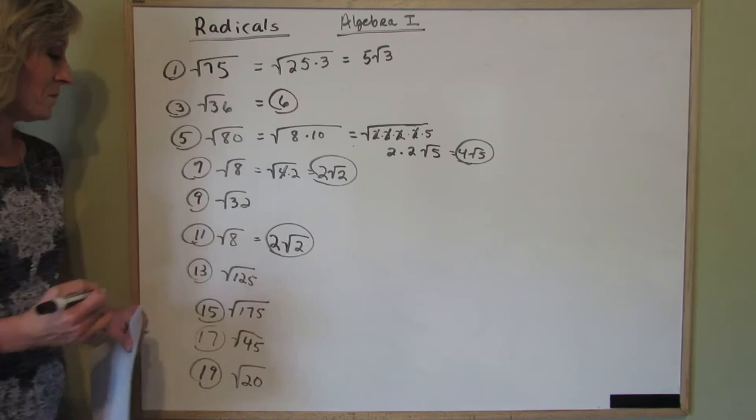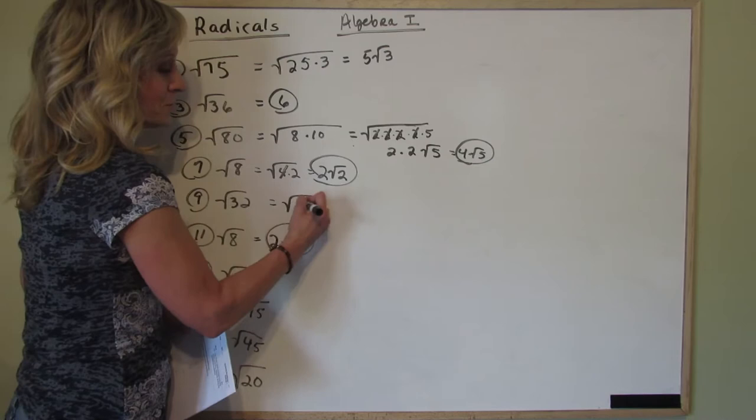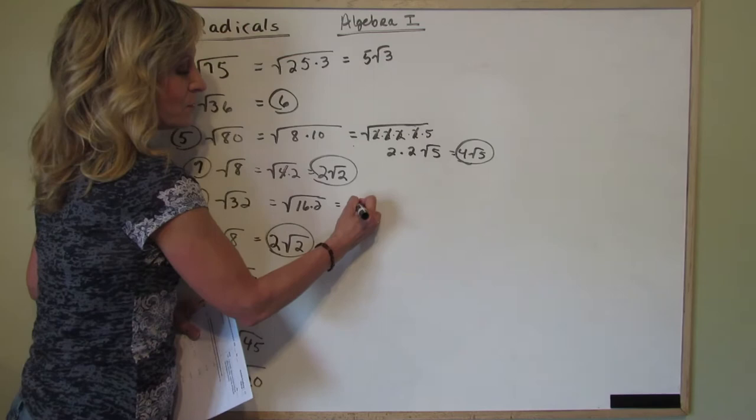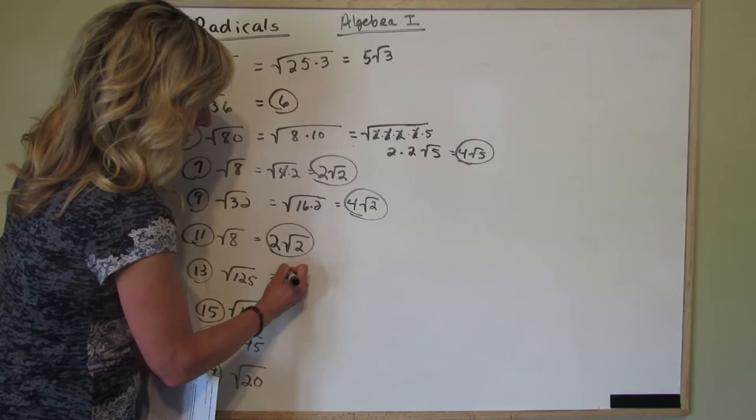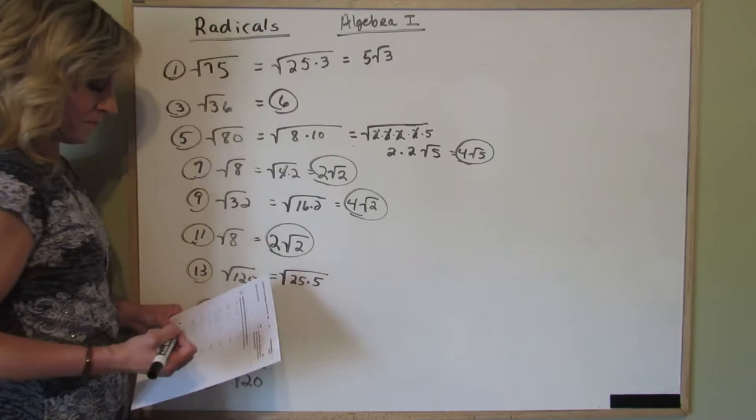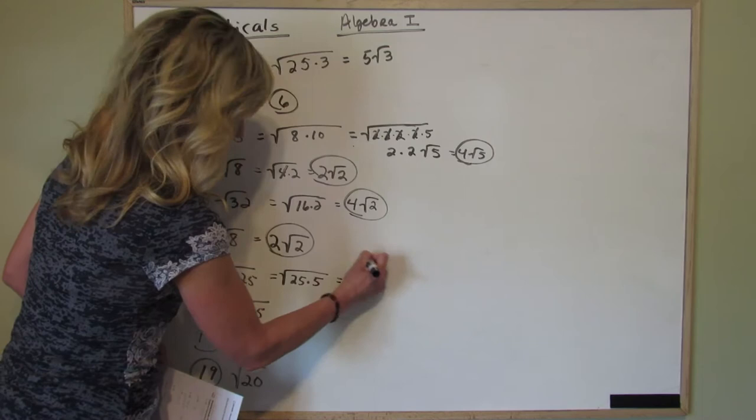Let's go back up to 9. Number 9 is the square root of 32. Well 32 is 16 times 2. 16 is your perfect square. The square root of 16 is 4, and you're left with a square root of 2 underneath there. Number 13, the square root of 125. Well 125 is 25 times 5. So the square root of 25 is 5, and you end up with 5 square root of 5.